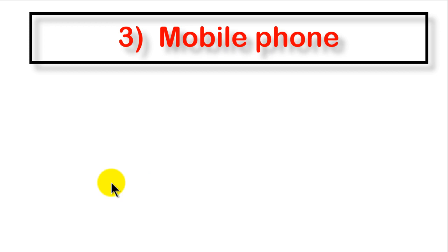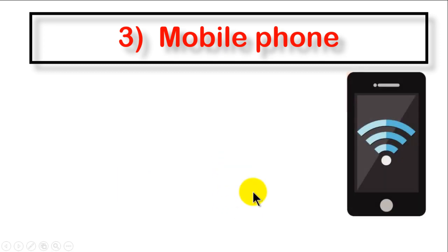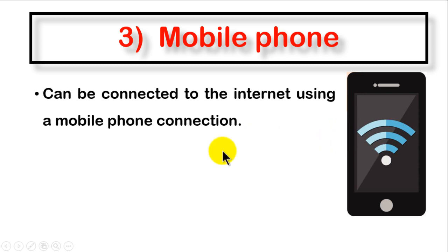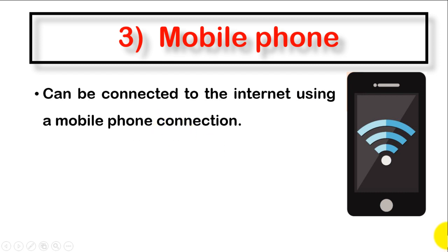Finally, let's move to the last network connection type, which is mobile phone. With mobile phone connection, we use a mobile phone number to build our network communication. These devices can be connected to the internet using a mobile phone connection. Nowadays you can activate an internet service and access the internet using your mobile phone.